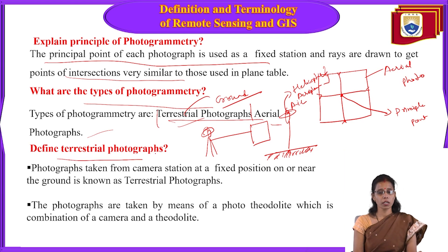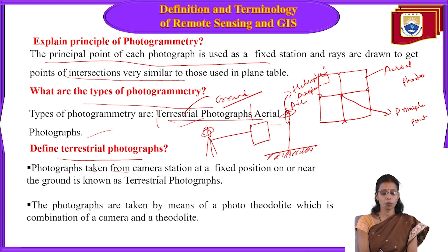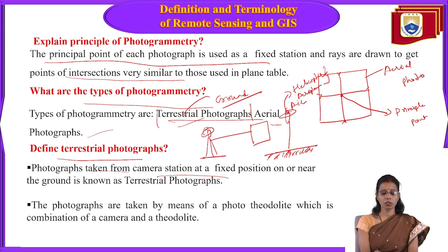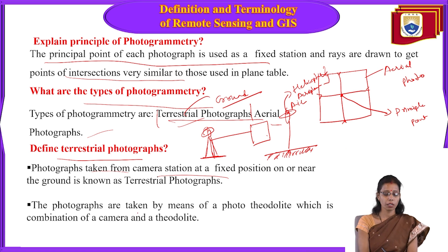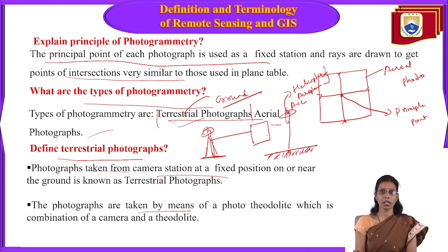Define terrestrial photograph: photographs taken from camera stations at a fixed position on or near the ground are known as terrestrial photographs. The camera does not move — it stays at the same location. These photographs are taken using a photo-theodolite, which is a combination of a camera and a theodolite.